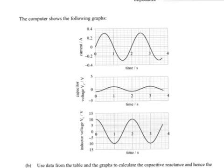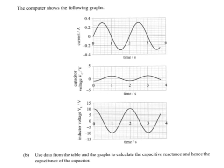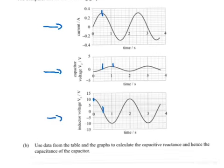Next one, the computer shows the following graphs. So this first one here is the current in the circuit. This next one is the voltage across the capacitor, and you'll notice straight away that the peak of the capacitor there is ahead, so it's leading. And the inductor down here is lagging behind where the current is. So remember our phase relationships there.